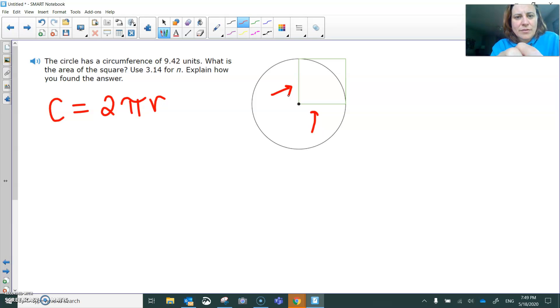So they told us what the circumference was. They told us that the circumference was 9.42. So we're going to put that number right there. So let's check out what this looks like. 9.42 equals 2πr.